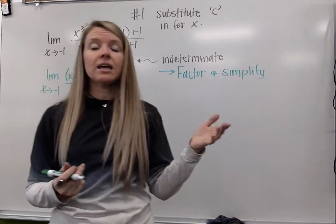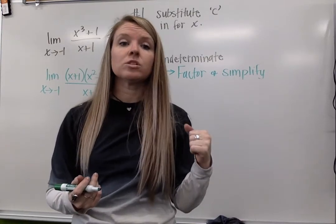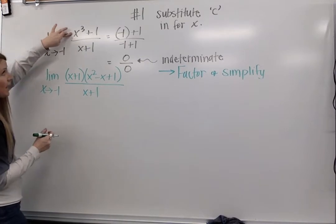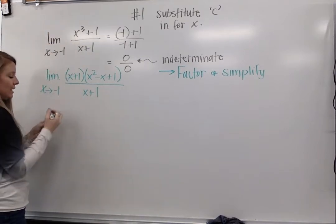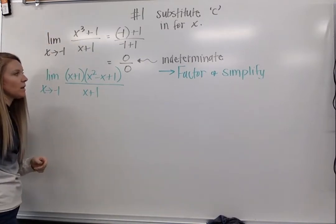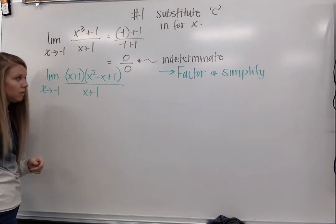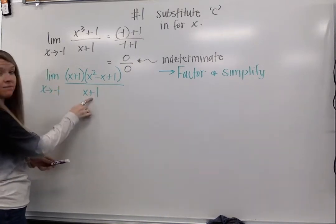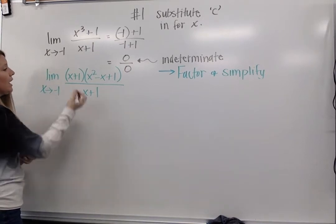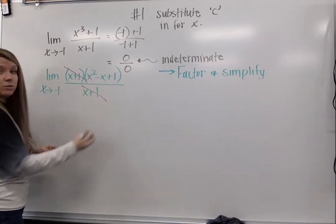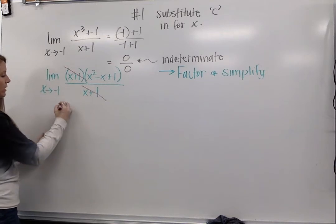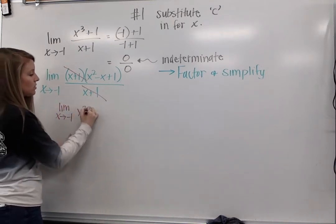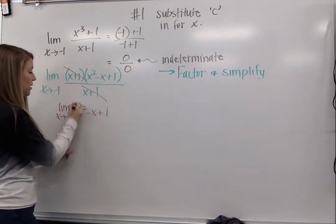So we plugged in our negative 1, we got 0 over 0, so I've got to do more work, so I decided to factor. I factored my x cubed plus 1 and I get (x + 1)(x² - x + 1). This is helpful because now I have an x plus 1 divided by an x plus 1. I'm going to reduce those down to 1, which leaves me with the limit as x approaches negative 1 of x squared minus x plus 1.